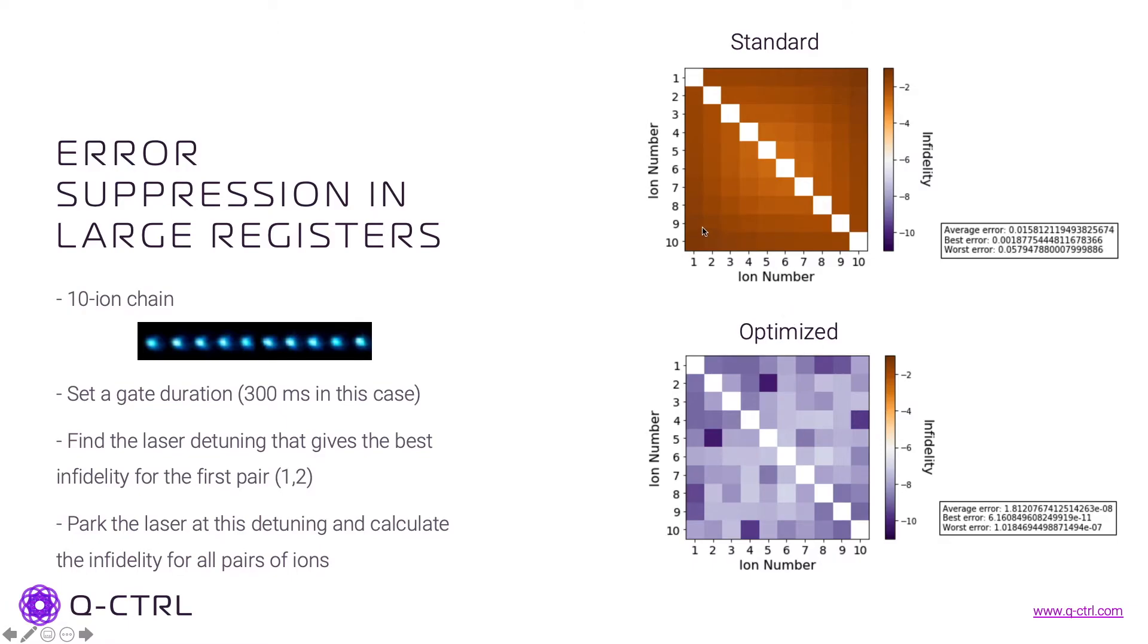And what we see here is that if we optimize the gate for a given pair, for example 1,2, and then just try to use the same laser and duration for the others, we have fairly high infidelity going from basically 0.2% to 5% with the standard gate, while with the optimized one we can have excellent gates with infidelities below 10^-7 for all possible pairs in the chain.